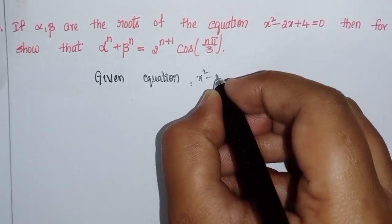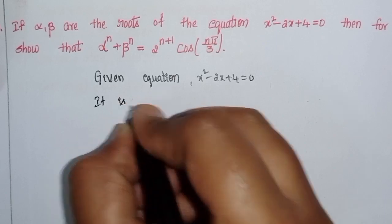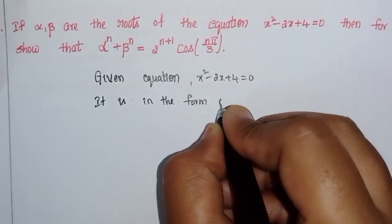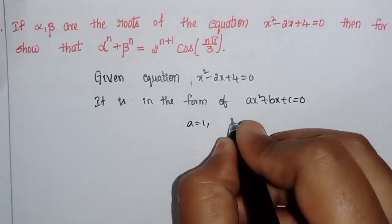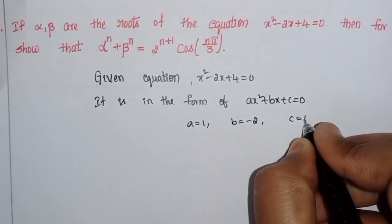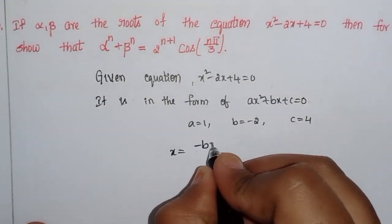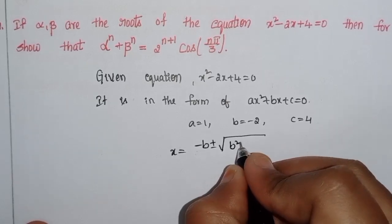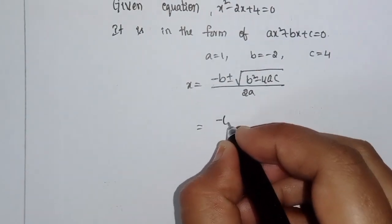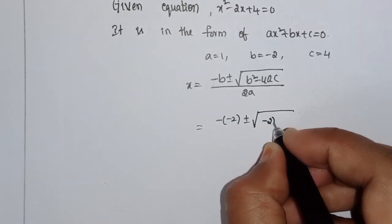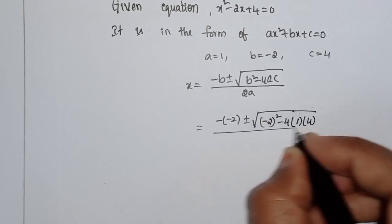The given equation is x² - 2x + 4 = 0. It is in the form ax² + bx + c = 0, where a = 1, b = -2, c = 4. To find the factors, we use x = (-b ± √(b² - 4ac)) / 2a. That gives us minus of (-2) plus or minus √((-2)² - 4·1·4), divided by 2a.